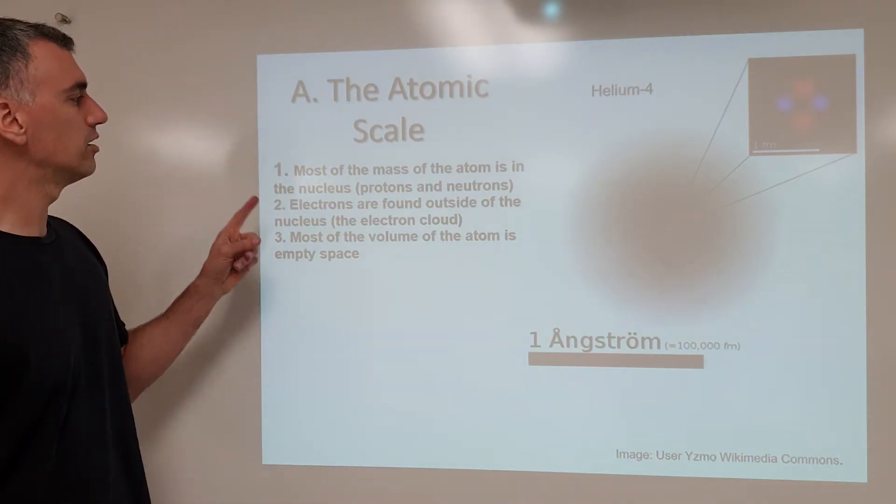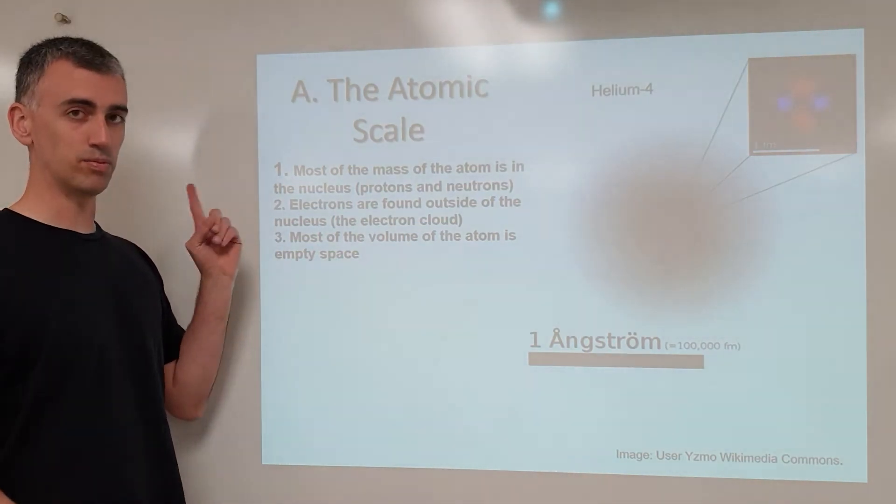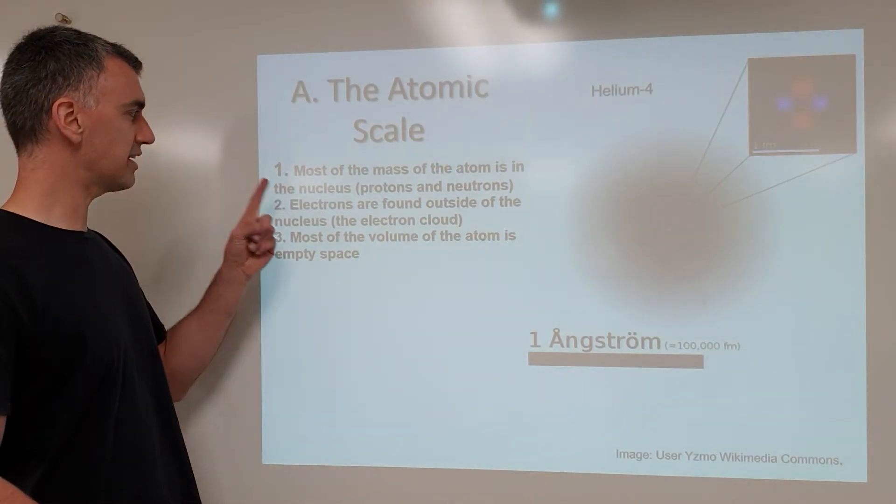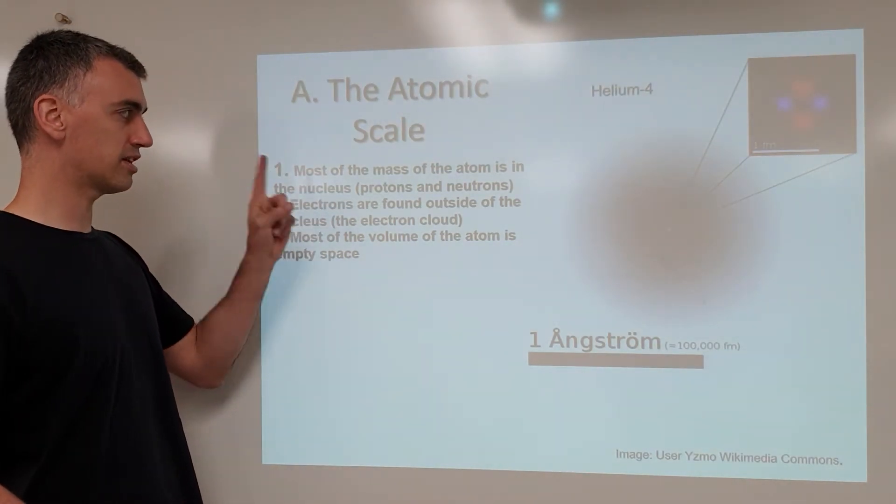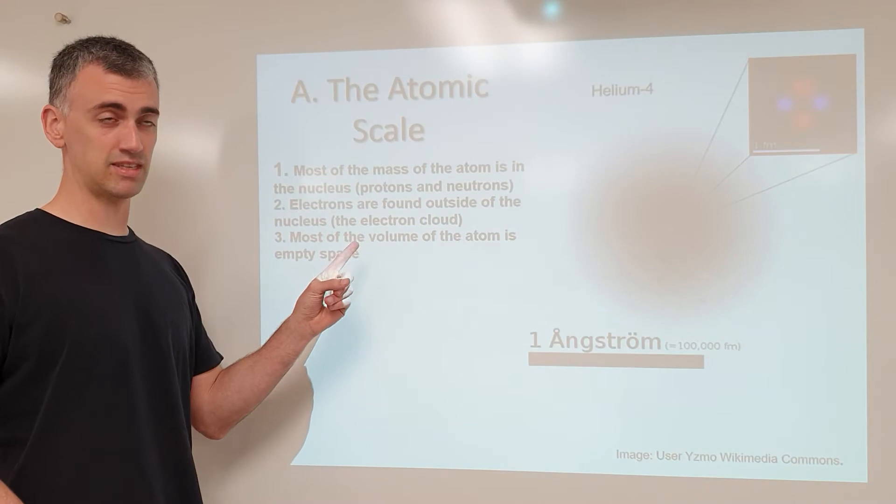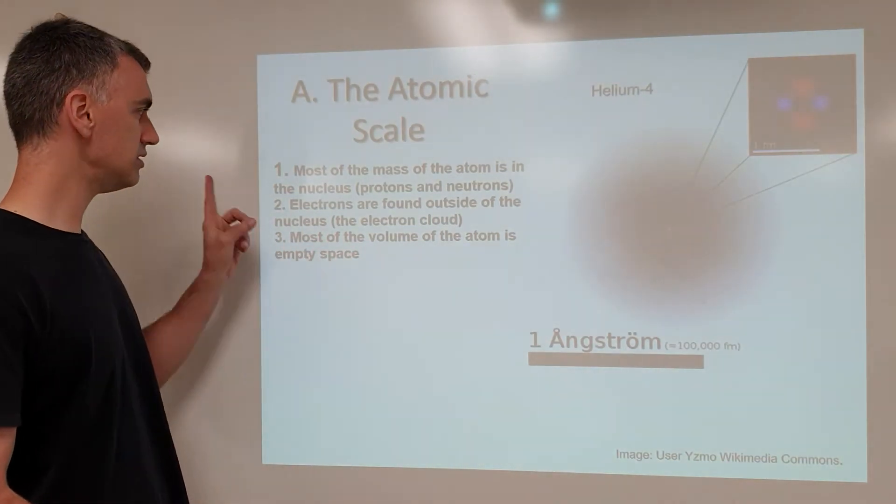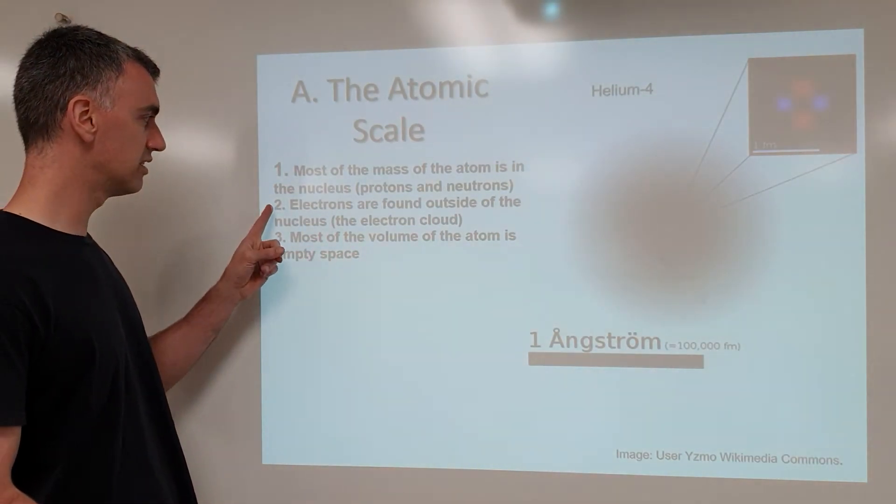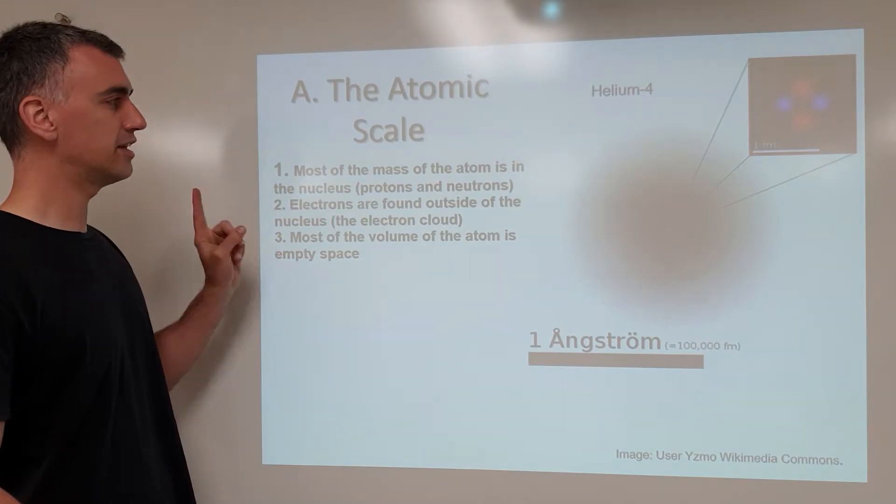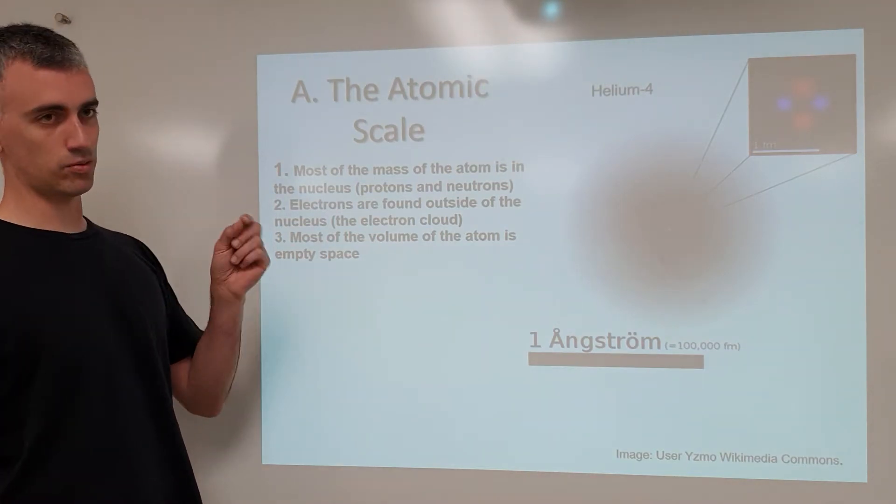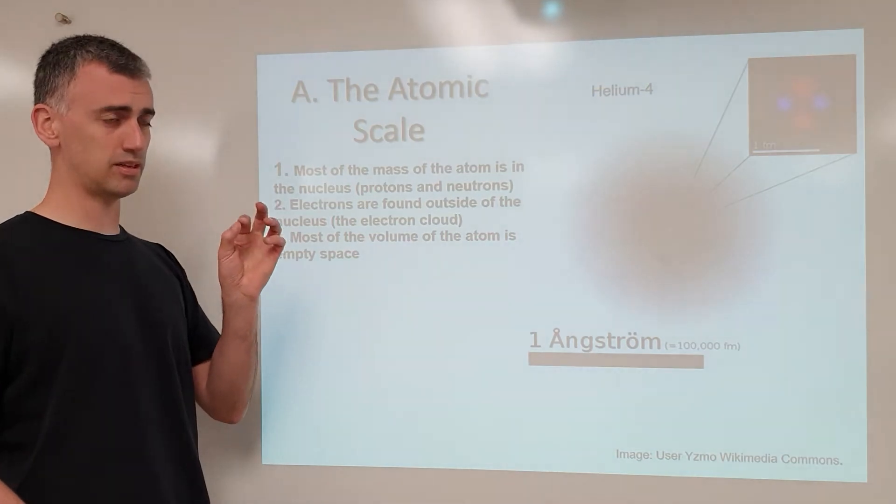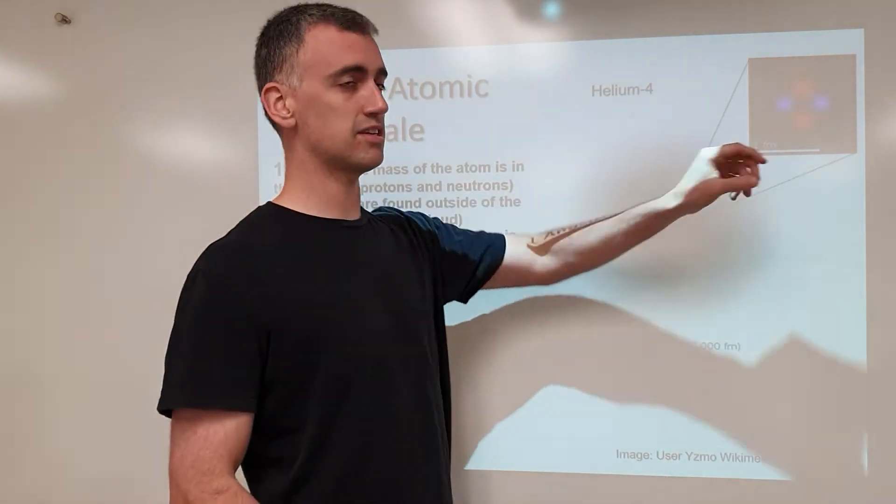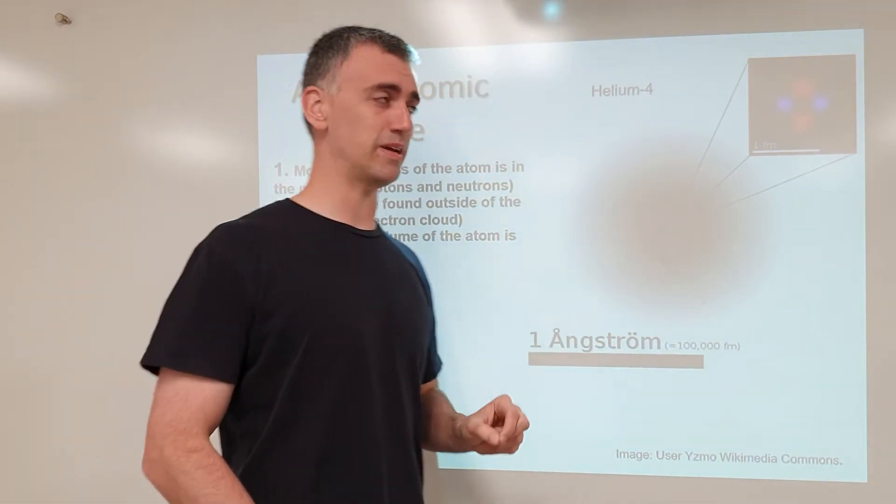Again, what I said is something that people need to know. Most of the mass of the atom is in the nucleus because the protons and neutrons are roughly 10,000 times as heavy as the electrons. The electrons are found on the outside in the electron cloud. They take up most of the volume, but only a little bit of the mass, whereas the nucleus is most of the mass, but only a teeny bit of the space.